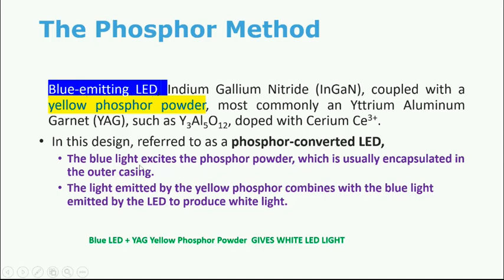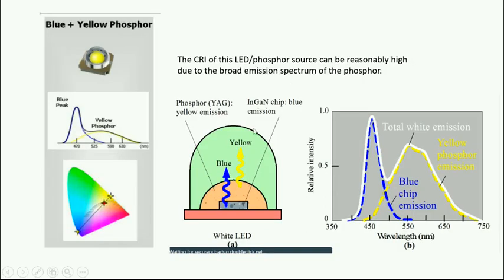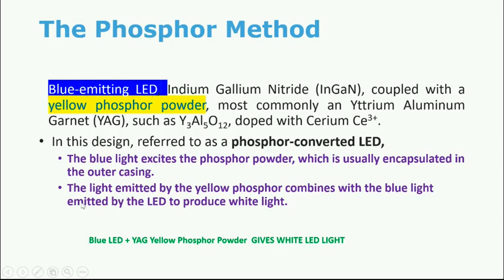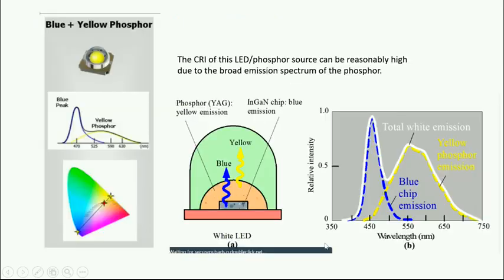This design is called the phosphor-converted LED method. The blue LED excites the phosphor powder, which is encapsulated in the outer glass casting. The blue light hits the yellow phosphor, exciting it to produce white light. The light emitted by the yellow phosphor combines with the blue light from the LED to produce white light.